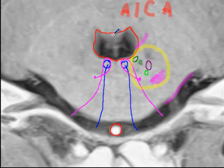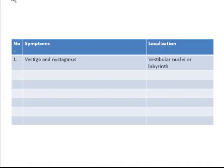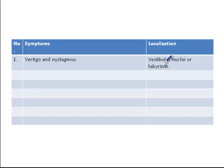So what is the result of an anterior inferior cerebellar artery stroke? The patient has vertigo and nystagmus, which can be localized to the vestibular nuclei in the pons. Additionally, the anterior inferior cerebellar artery has a branch called the internal auditory artery, which supplies the labyrinth, so occlusion of this artery can also lead to vertigo and nystagmus.